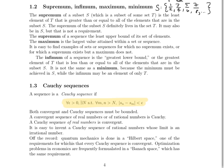Both convergent and Cauchy sequences must be bounded. A convergent sequence of real numbers or of rational numbers is Cauchy. A Cauchy sequence of real numbers is convergent — that is proven in the text. It's also easy to construct a Cauchy sequence of rational numbers whose limit is an irrational number. As a note, in quantum mechanics we work in a Hilbert space, and one of its requirements is that every Cauchy sequence is convergent. Optimization problems in economics are frequently formulated in a Banach space with the same requirement — topics you'll learn more about in Math 116, convexity and optimization theory. The proof that a convergent sequence of real numbers or rationals is Cauchy will be one of the proofs you're responsible for this week.